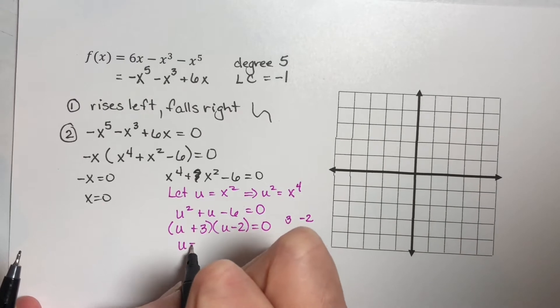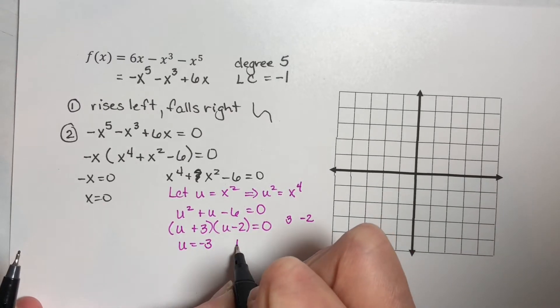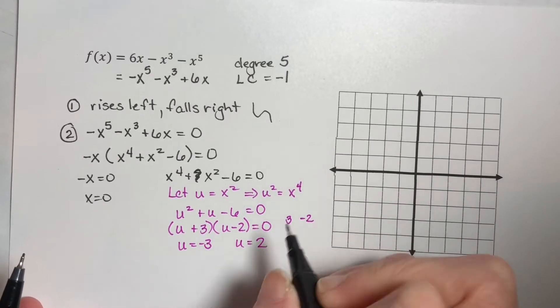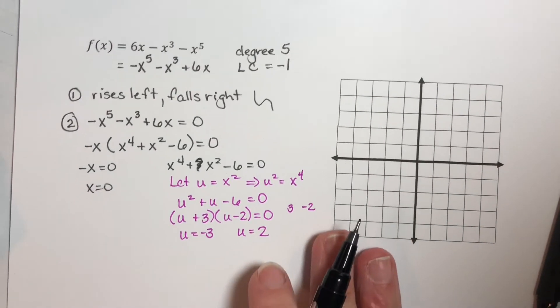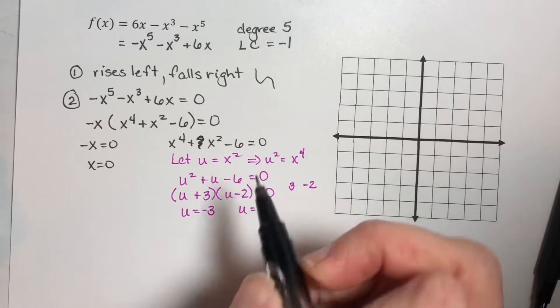So u equals negative three, and u equals positive two. Now we weren't asked to find u, we were asked to find x. So undo your substitution.